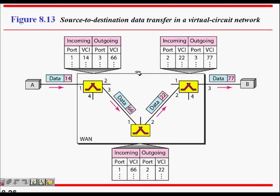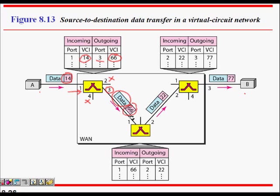During data transfer, A sends data to B with VCI 14. The switch sees port 1, VCI 14 in its table and forwards to port 3 with new VCI 66. That packet arrives at the next switch at port 1 with VCI 66, which maps to port 2 with VCI 22. The packet then reaches the next switch at port 2 with VCI 22, which maps to port 3 with VCI 77, delivering the packet toward B.